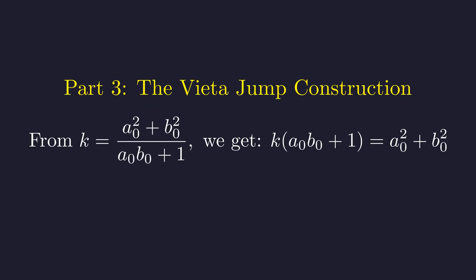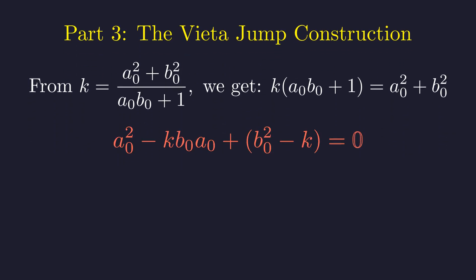Starting with our equation for k, let's multiply both sides by the denominator to clear the fraction. Rearranging this equation, we can view it as a quadratic in a0. We know a0 is one root of this quadratic. This is a quadratic equation in a0 with coefficients 1, negative k times b0, and b0 squared minus k.